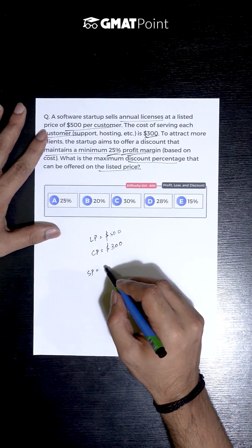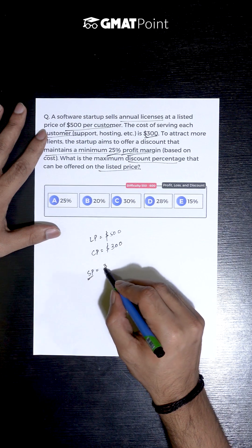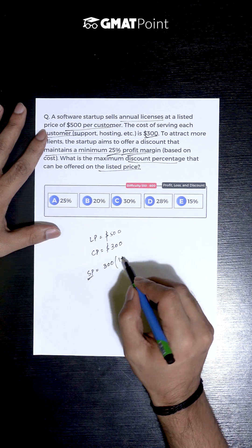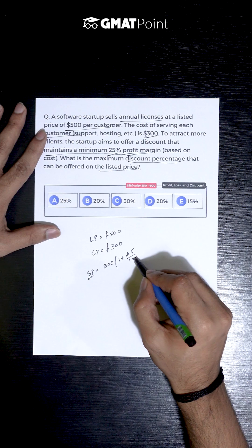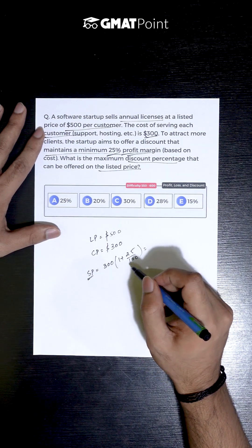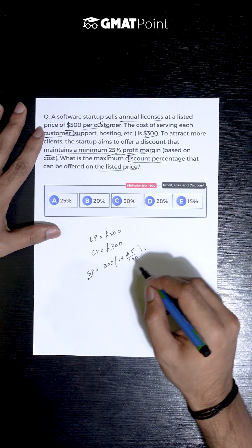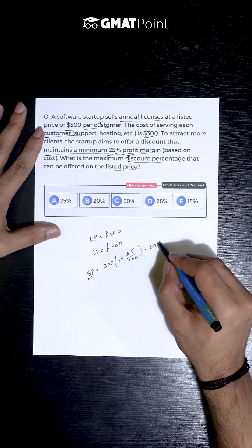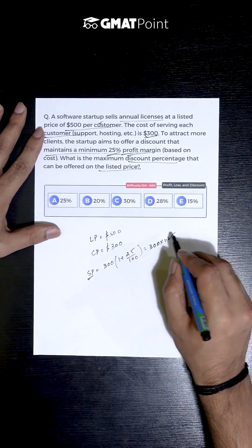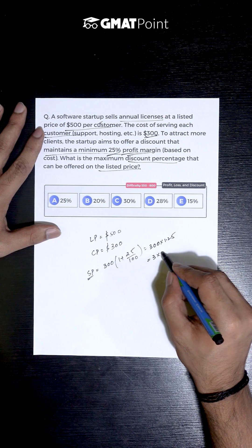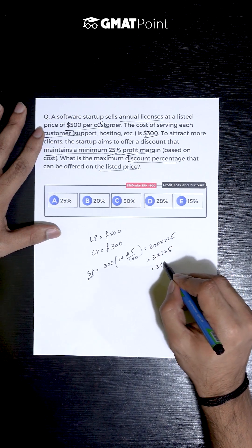The least selling price can be calculated as cost price times 1 plus 25 by 100. This would be the selling price when the software startup attains a profit of 25%. This can be calculated as 300 into 1.25, that is nothing but 3 into 125, that is $375.